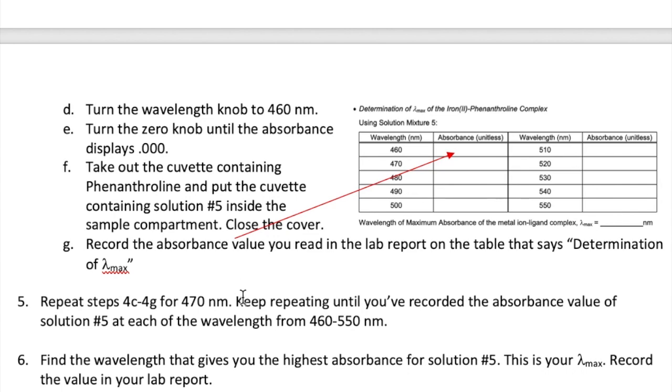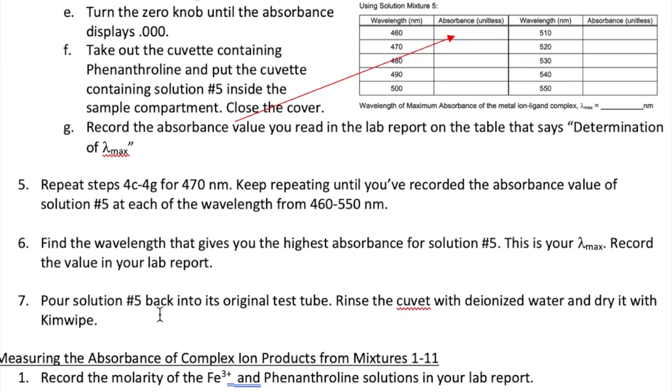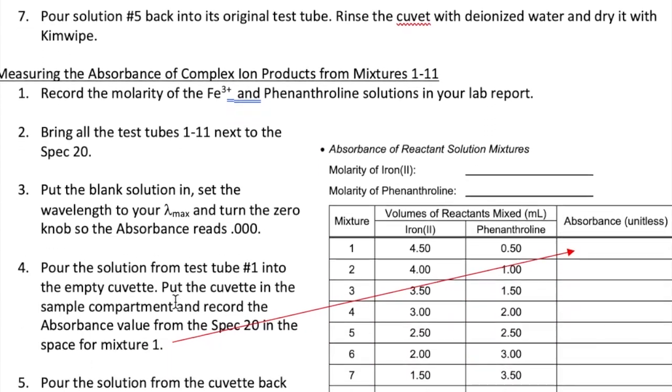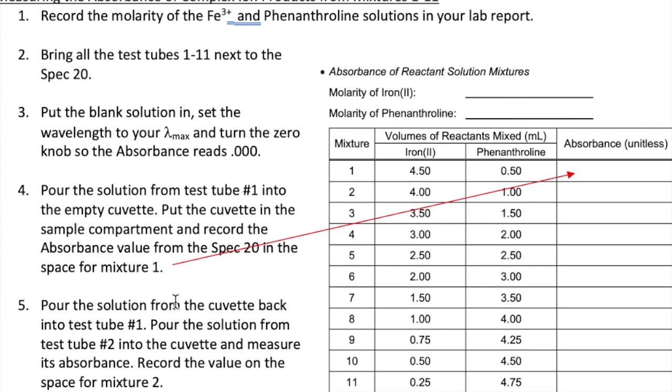Now that you've determined your lambda max, pour solution number 5 back into its original test tube and rinse the cuvette that had solution number 5 in it earlier and dry it well with a Kim Wipe. Now you're ready to measure the absorbance of all the solutions in test tubes 1 through 11. Bring all the test tubes to the spec, set the wavelength on the spec to the value of your lambda max, and put the cuvette containing the blank solution in the spec and turn the zero knob until it reads 0.000 again. You need to blank the spec at the beginning.